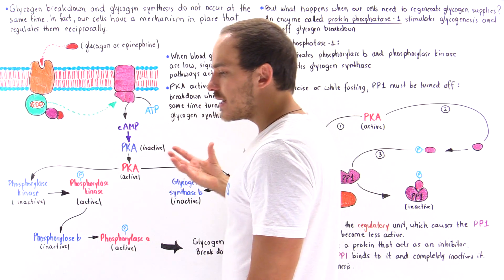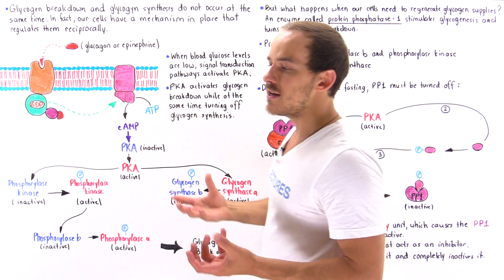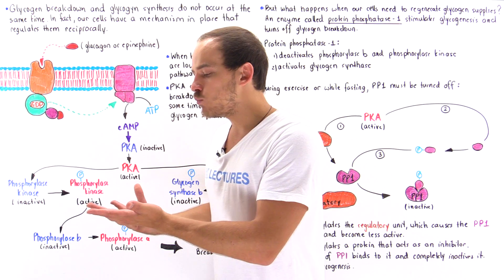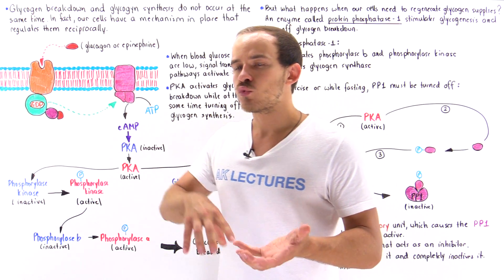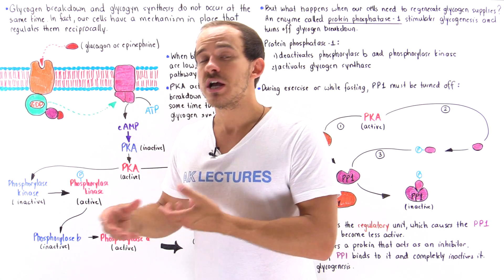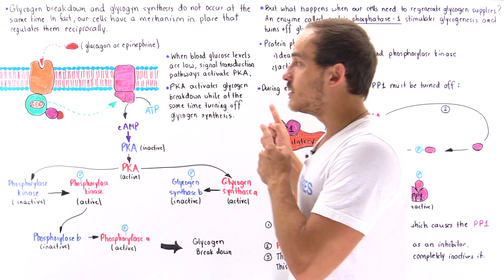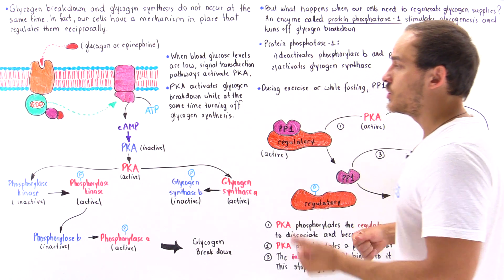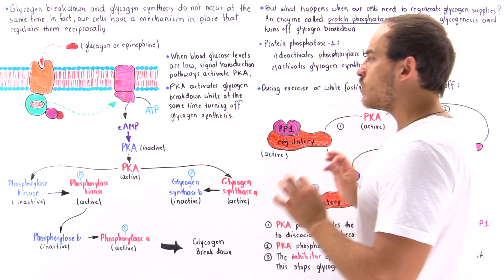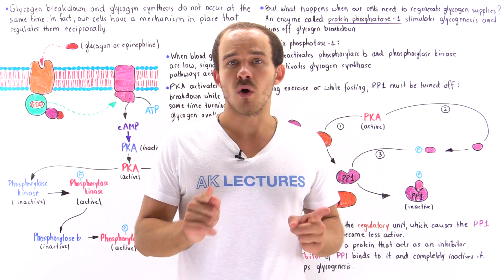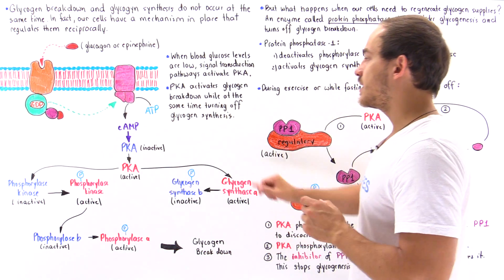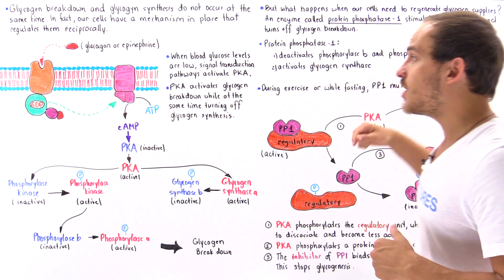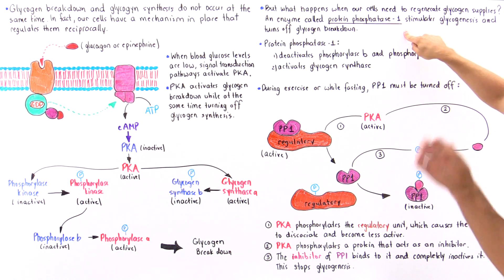Now suppose our body is at rest or has just eaten a meal rich in carbohydrates. In this case, skeletal muscle cells will begin rebuilding glycogen to replenish glycogen stores, and liver cells will take up glucose from the blood and convert it to glycogen. Our body will want to stop glycogen breakdown while turning on glycogen synthesis. The enzyme that plays a key role in this process is protein phosphatase 1, or PP1.